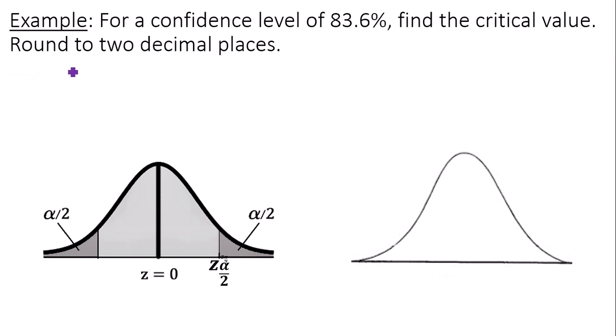So first let's find alpha. Alpha is always 1 minus the confidence level, which would be 1 minus 0.836. Which gives us 0.164.